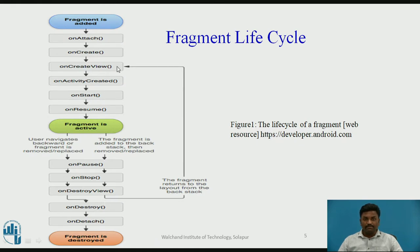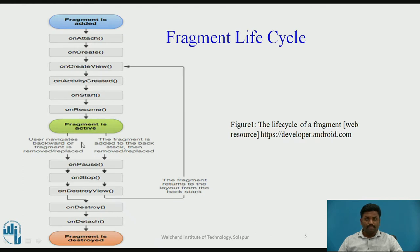When does a particular state transition happen? This is a state transition diagram. When a Fragment returns to the layout, it can go back to OnCreateView, then back to OnStart and into the running state. There can be multiple Fragments running inside an Activity. A Fragment will run only when an Activity has started, and once the content view is over, it will go to OnDestroy and terminate.